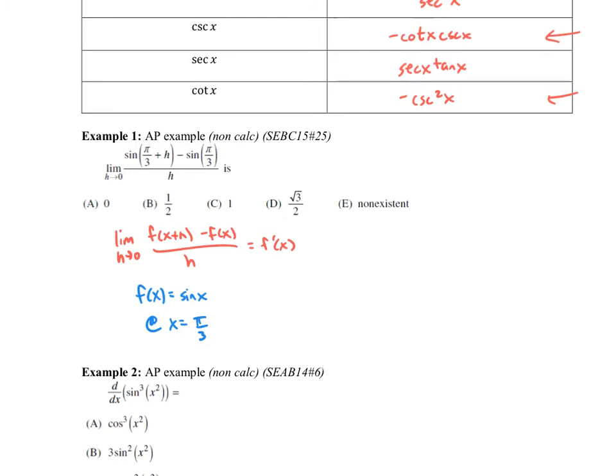So then our goal here is to take the derivative of sine of X, which is cosine of X, and then we're going to evaluate that derivative at pi over three and cosine of pi over three is one half. So we get letter B.